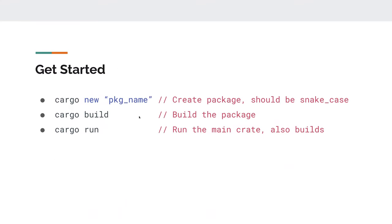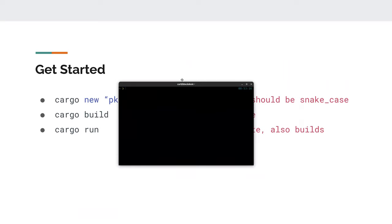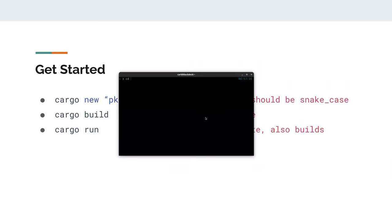To get started you can use `cargo new <package-name>` with snake_case to create a new project — this creates some basic folders and files. `cargo build` builds your project from within the package directory, and `cargo run` will run it and also build it if it's not already built.